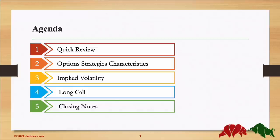Today, we are going to do a quick review about the basics that we have learned so far. We are going to review again Options Strategies Characteristics and Implied Volatility. And then we'll move to the first Options Strategy that we are going to discuss today, which is Long Call. Long is Buy, so we will be buying a Call Option. And finally, we'll end the video with the closing notes as usual.